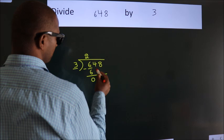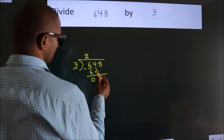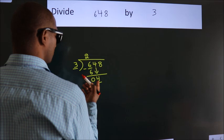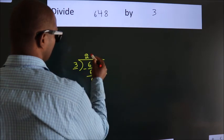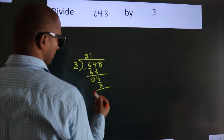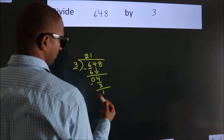After this, bring down the beside number, so 4 down. A number close to 4 in 3 table is 3 1s, 3. Now, we subtract, we get 1.